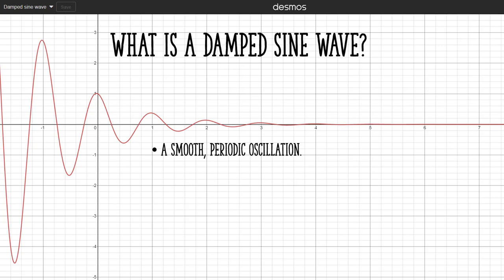A damped sine wave is a smooth periodic oscillation. It has an amplitude that approaches zero as time goes to infinity.